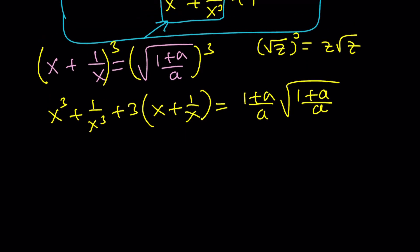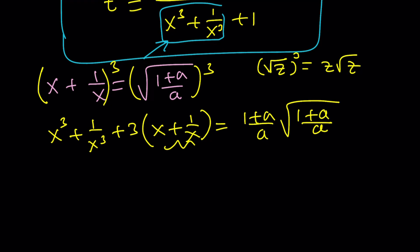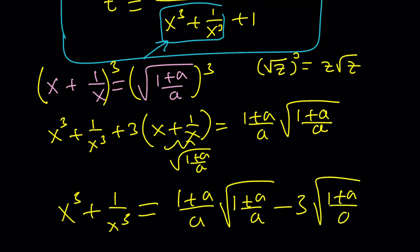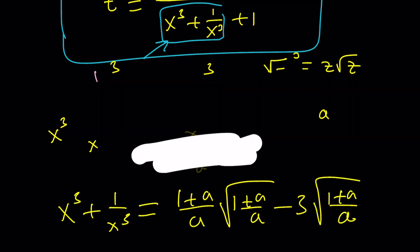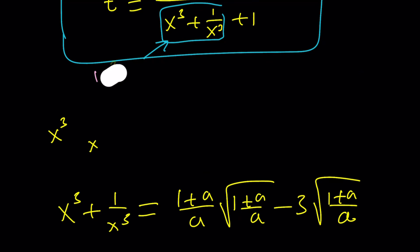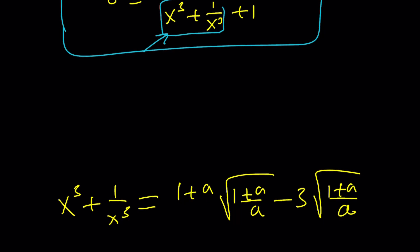This should be the result. But what is x plus 1 over x? Again, I know what it is. It's the square root of 1 plus a over a. So from here, this is what I'm looking for. And that should equal 1 plus a over a times the square root of 1 plus a over a minus 3 times the square root of 1 plus a over a. This is x cubed plus 1 over x cubed. Let's go ahead and clean this area one more time because I need room and I don't want to go to the white pages. I like the dark background, and I hope that's easy on your eyes too.